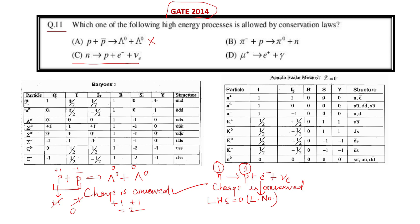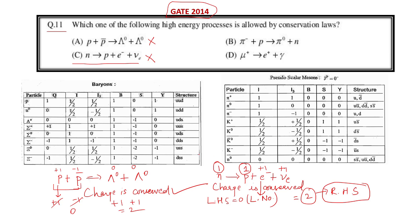On the right-hand side, lepton number is plus one for the electron and plus one for the electron neutrino, giving two. Lepton number is a fundamental conserved quantity and it is not conserved in this reaction, so this is also not allowed.